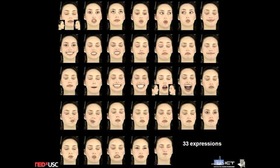Even more importantly, since this is a photometric process that only takes three seconds to capture, we can shoot Emily in just part of an afternoon in many different facial poses and expressions. Here you can see her moving her eyes around, moving her mouth around — and these we're actually going to use to create a photoreal digital character.